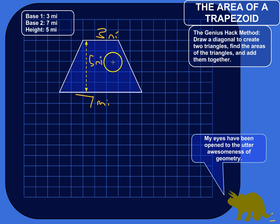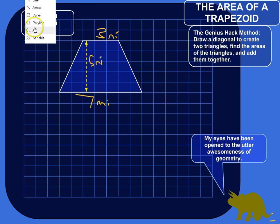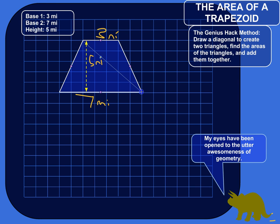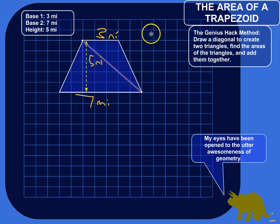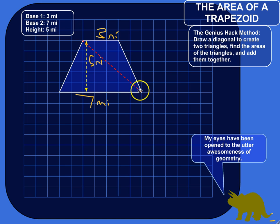The height is just the distance between the two bases, so it's five miles here. What we're going to do is chop this into two triangles. I'm going to draw a line — like that — to connect and chop it into two triangles.